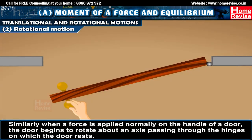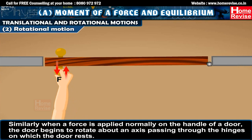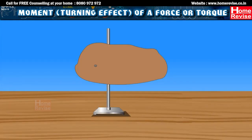Similarly, when a force is applied normally on the handle of a door, the door begins to rotate about an axis passing through the hinges on which the door rests. This is the moment, that is, the turning effect of a force or torque.